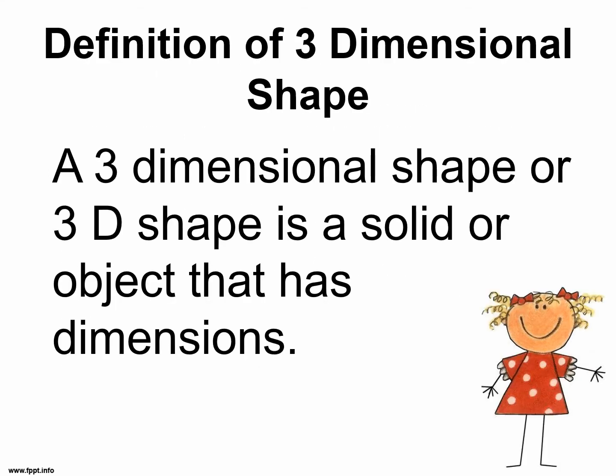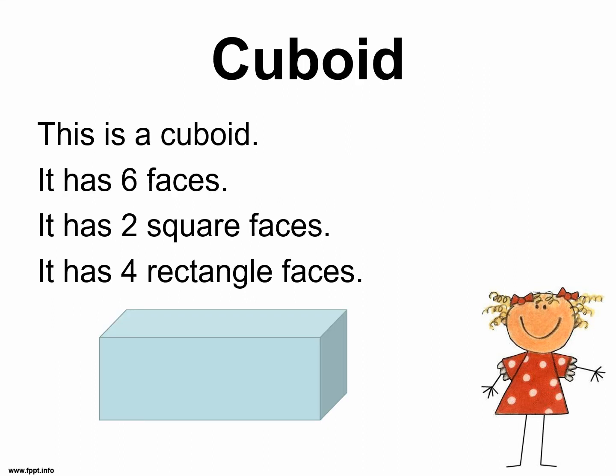Definition of a three-dimensional shape. A three-dimensional shape, or 3D shape, is a solid or object that has dimensions. I would have covered this in the previous lesson on cube, so please go back and look at the first lesson on cubes to get a better explanation of 3D shapes.